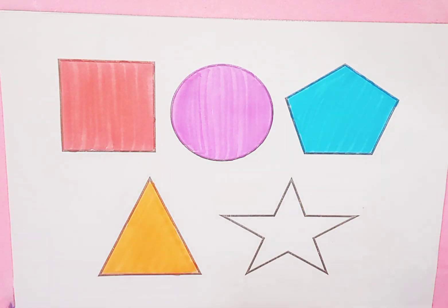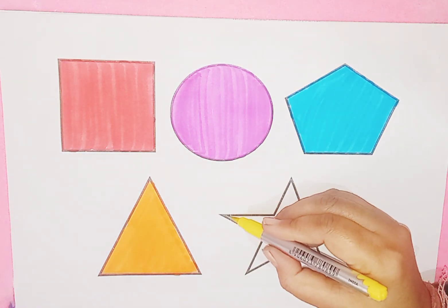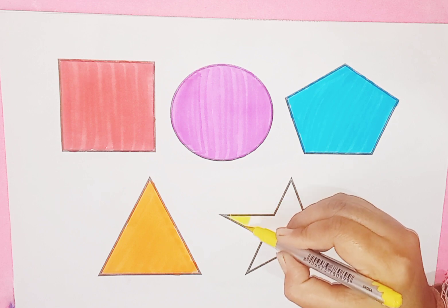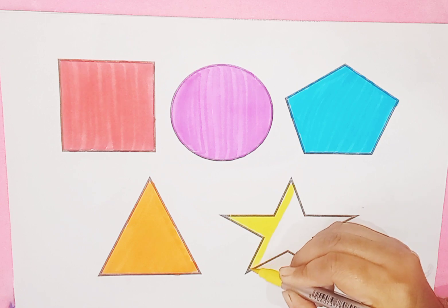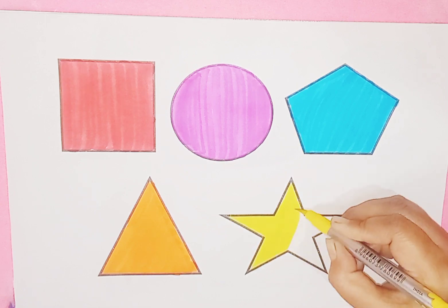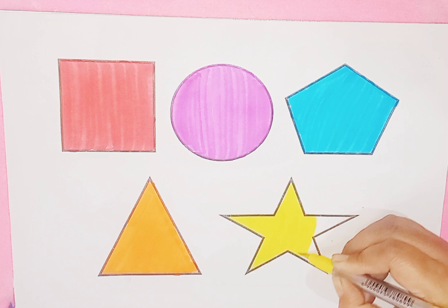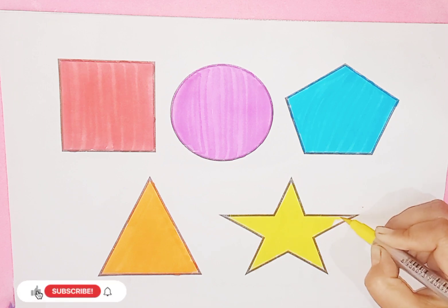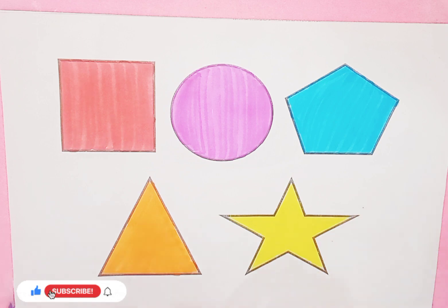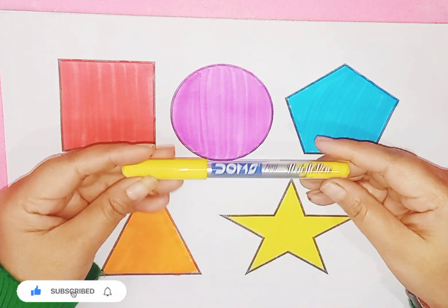Yellow color, star. Twinkle, twinkle little star, how I wonder what you are. Up above the world so high, like a diamond in the sky. This is star. Star with yellow color.